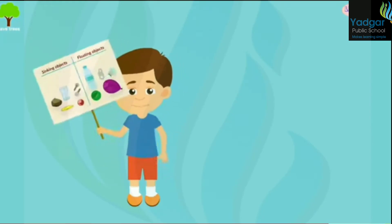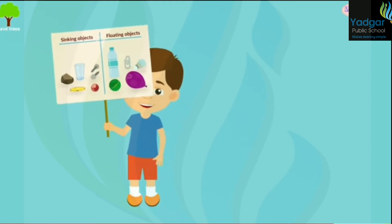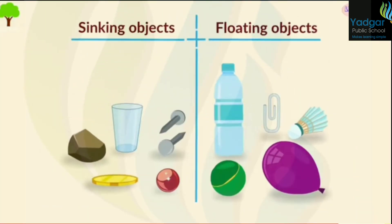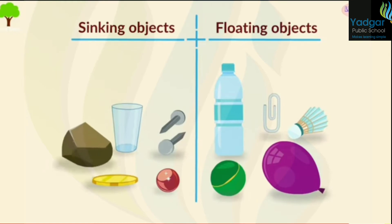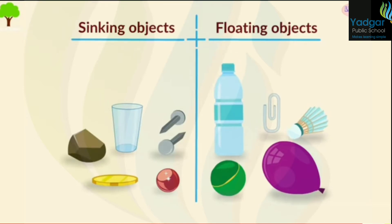Can you show some objects that sink and some that float? Some sinking objects are coins, iron nails, glass, stone and marble. Some floating objects are bottles, paper clips, cork, plastic balls, and balloons.